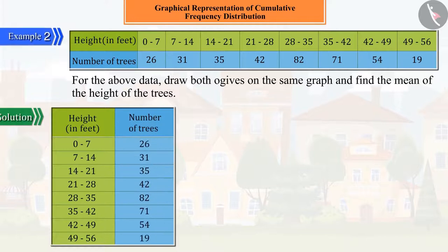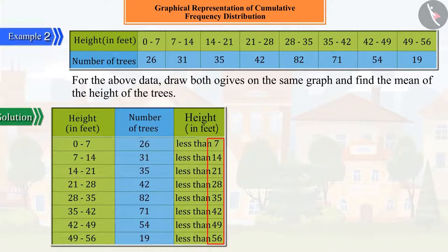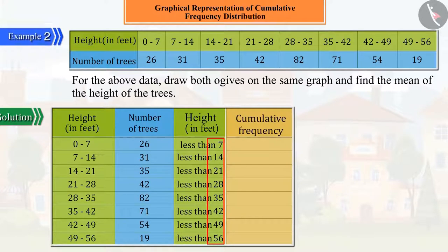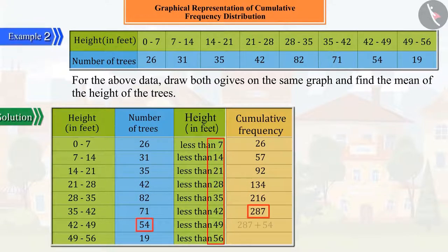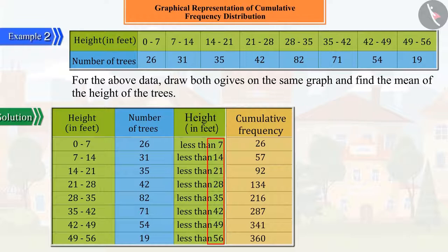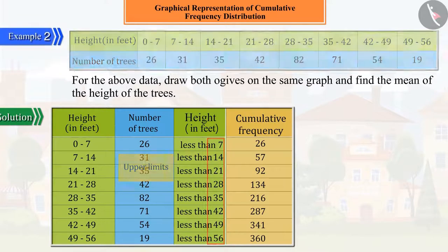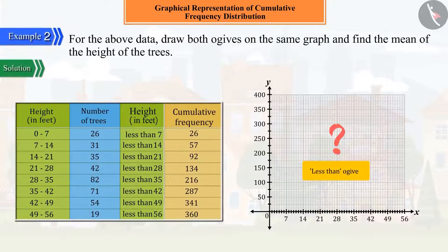With the help of the given distribution, we first construct a less-than cumulative frequency distribution for the less-than type of ogive, where the corresponding upper limits of the class intervals are from 7 to 56. Can you draw the less-than type of ogive with the help of the above distribution?